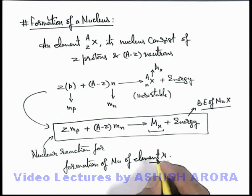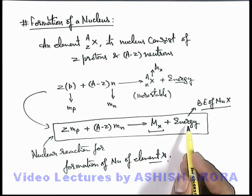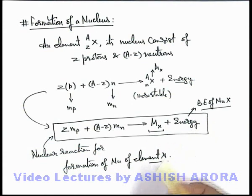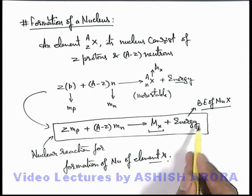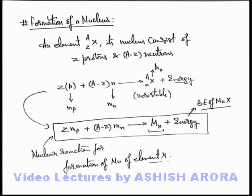This is the way when a nucleus is produced, always some energy is released and this is the energy which we term as binding energy. In the next section we'll talk about how the energy is produced and how it can be calculated. That we'll take in the next section of mass defect.